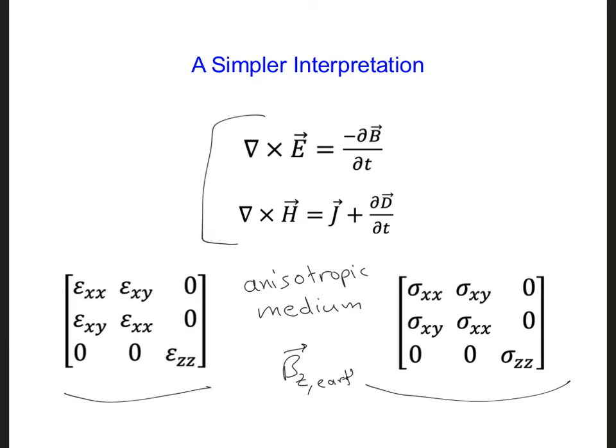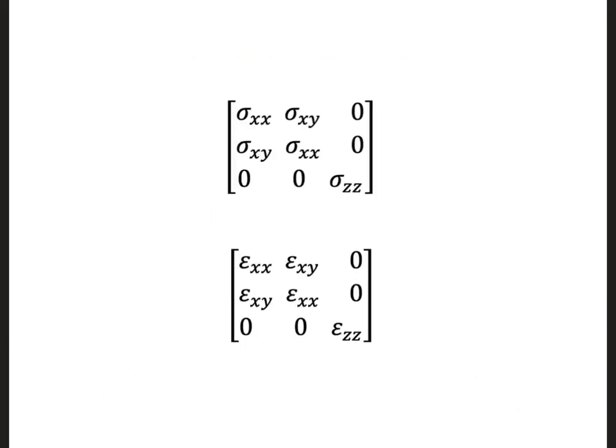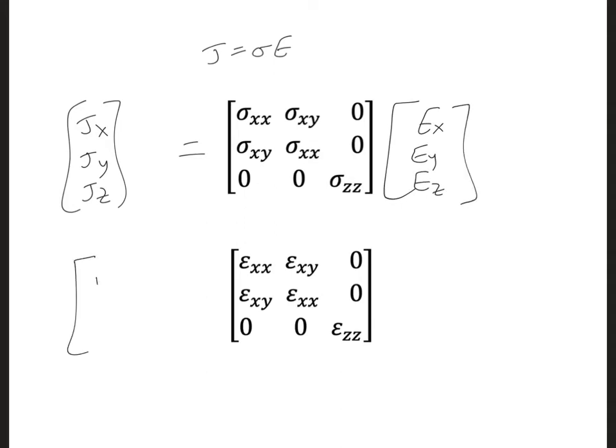The way that we've written the tensors here holds for an electromagnetic wave propagating in the direction of the Earth's magnetic field. So BZ is in the Z direction, the Earth's magnetic field would be in the Z direction. The effect of having tensors is that now, instead of J equals sigma E, we're going to have JX, JY, JZ equals this tensor for sigma, EX, EY, and EZ.